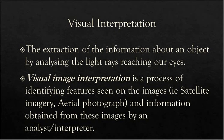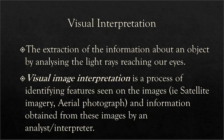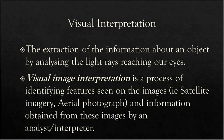Let's first understand what is visual image interpretation. It is basically the extraction of information about an object by analyzing the light rays reaching our eyes after having some optical reaction with that object. In visual image interpretation, we try to process or identify features seen on images such as satellite imageries and aerial photographs. This is the process of extracting information from these images by an analyst or interpretator, and it is very much dependent on the experience and quality of the interpretator.